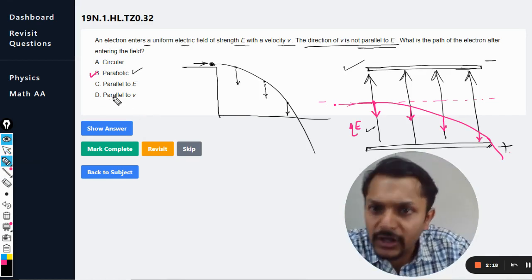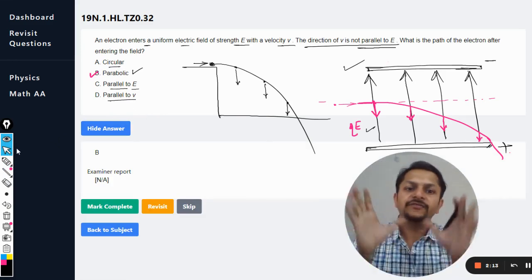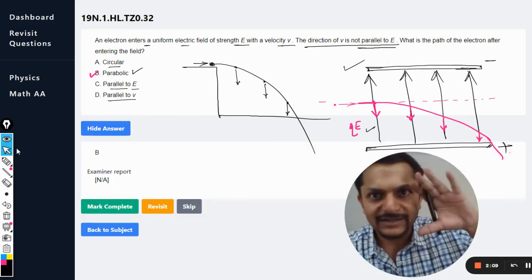So, it is not parallel to E, not circular. Yes, the answer is definitely B. My dear students, this is Professor Guru. Please subscribe to the YouTube channel. All the best. Bye.